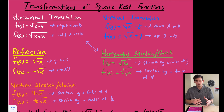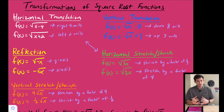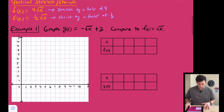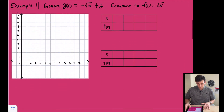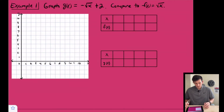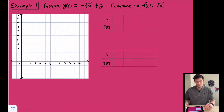We're going to look at a couple of examples — one with just a couple of transformations, and one with a bunch of transformations. Example number one: graph g(x) = −√(x + 2) and compare it to the parent function.